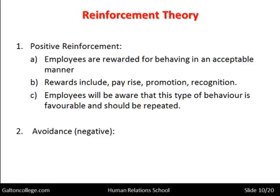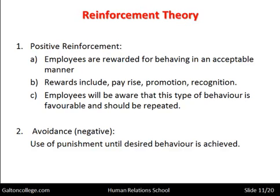On the other hand, there are negative aspects that may be brought into play — we call these avoidance. Certain behaviour may be discouraged because it's counterproductive or not in the interest of the business. In this case, punishment may be used until the desired behaviour is achieved. Punishment may be a reduction in salary, a demotion, movement of the person to a different part of the organisation, or some other way of discouraging certain behaviour in order to reduce that particular type of behaviour.